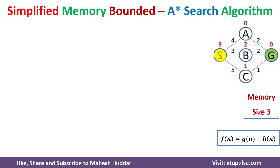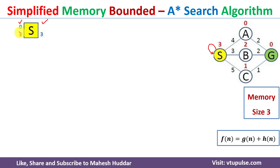In SMA* we start at the source node and expand it based on available paths. I write the source node S into memory. On the left side I write g(n) and h(n): g(n) for S is 0 since the cost from S to S is 0, and the heuristic value of S is 3, giving an f-value of 3. From S there are three available paths: S to A, S to B, and S to C.